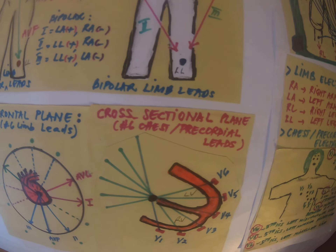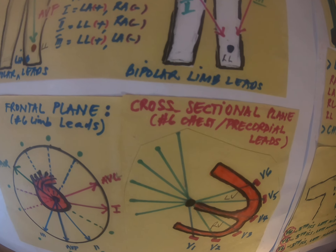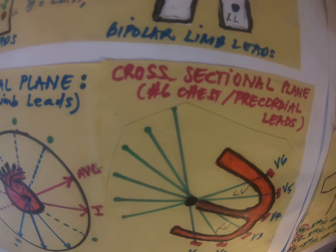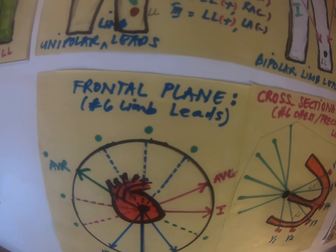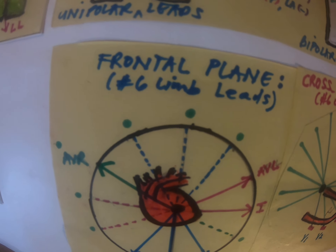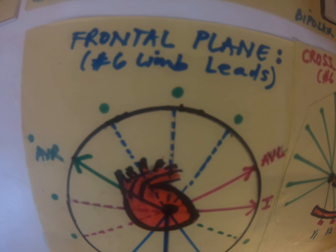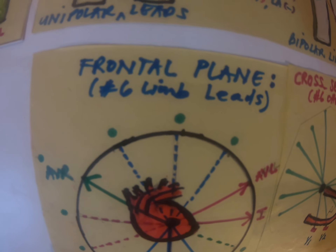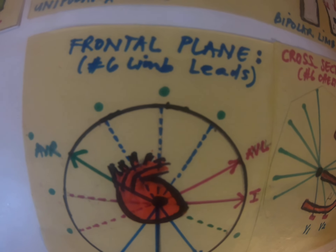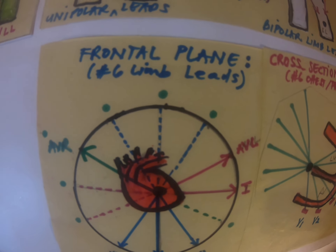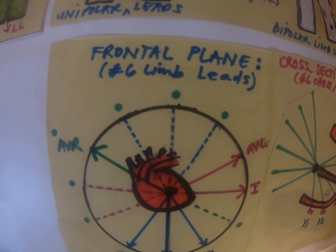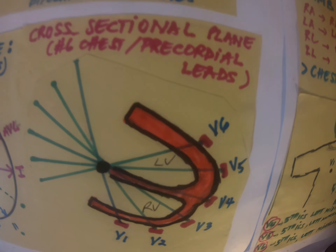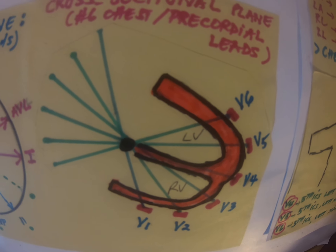These are the planes needed to view the heart. The frontal leads are like cameras — they look at the heart from the front. The cross-sectional view is deeper, providing a view of the interior of the heart.